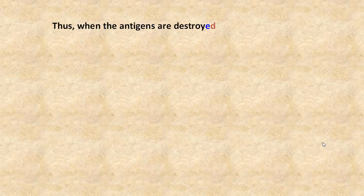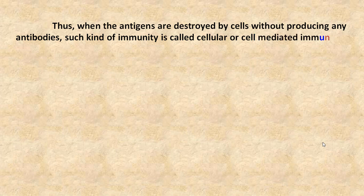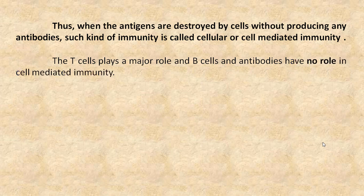Thus, when the antigens are destroyed by cells without producing any antibodies, such kind of immunity is called cellular or cell-mediated immunity. T cells play a major role, and B cells and antibodies have no role in cell-mediated immunity.